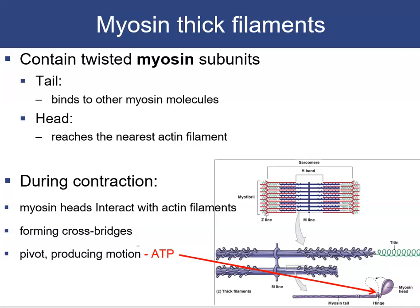During a contraction, the myosin heads interact with actin filaments, forming cross bridges that link myosin to actin. The myosin heads pivot, producing motion — this is the power stroke. Whenever ATP is present, the head recocks: at rest it is bent backward, but when activated and attached to actin it pivots and pulls the actin along with it.